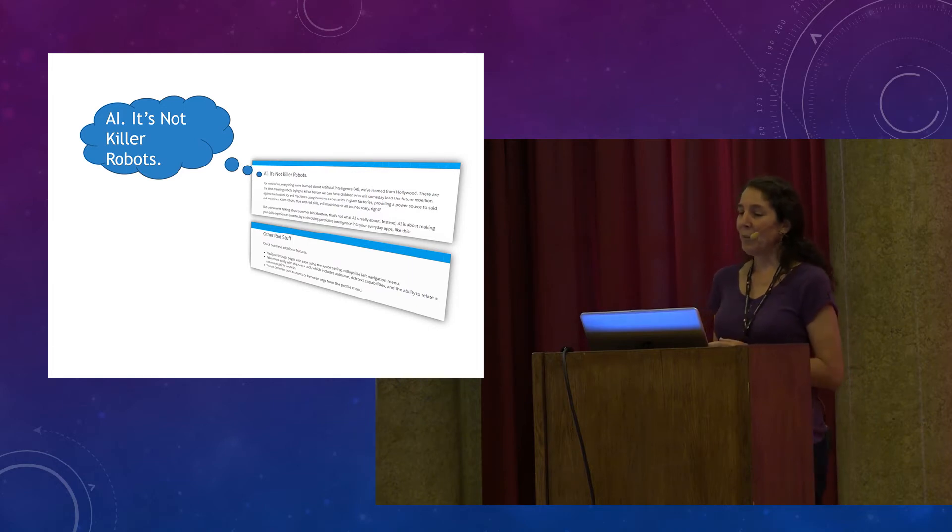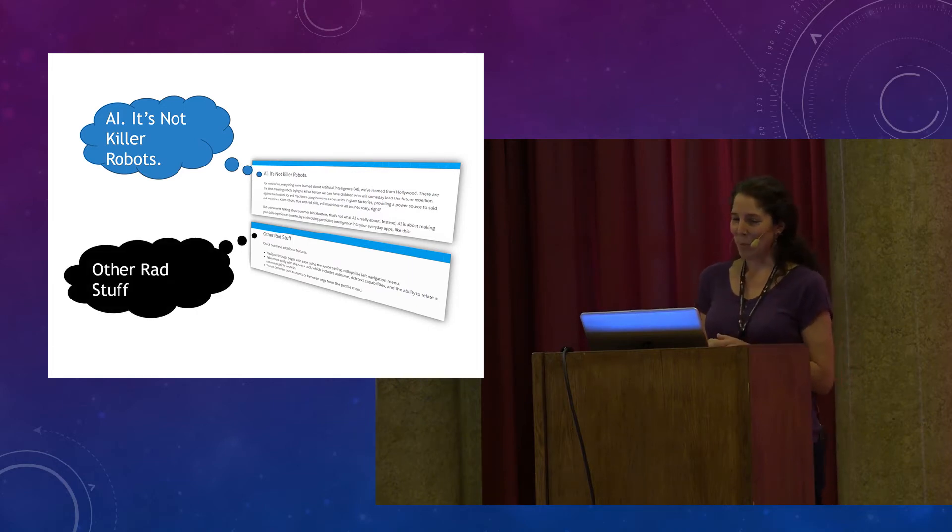In a software training module, I was elated to find a conceptual paragraph devoted to killer robots as well as other rad stuff. If you'll indulge me and if I have time, I'd like to just read this passage for you. It is wonderful. "For most of us, everything we've learned about artificial intelligence, A.I., we've learned from Hollywood. There are the time-traveling robots trying to kill us before we can have children who will someday lead the future rebellion against said robots. Or evil machines using humans as batteries in giant factories providing a power source to said evil machines.